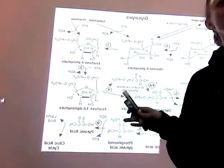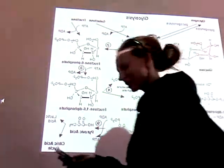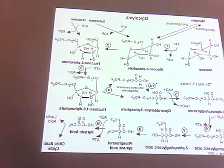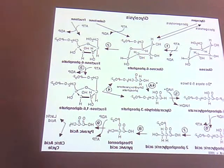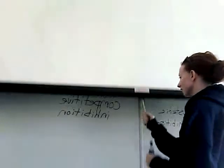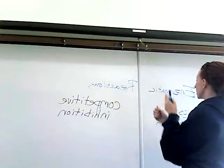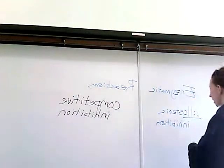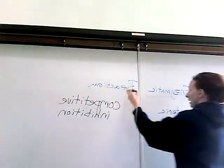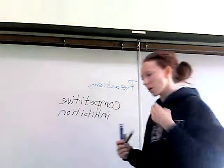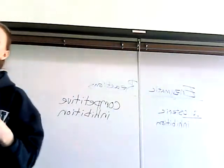We're done with glycolysis, so we're going to put this one away. Two things really quick before we leave. We're going to talk about two different kinds of inhibition. We were talking about enzymatic reactions. Remember when we were talking about cascades and about signals and why it's so important for us to be able to use cascades?